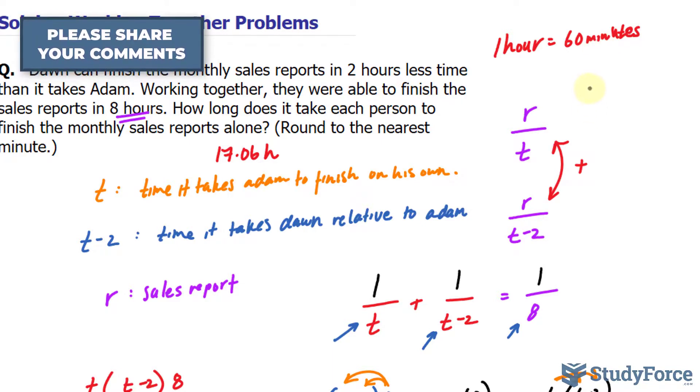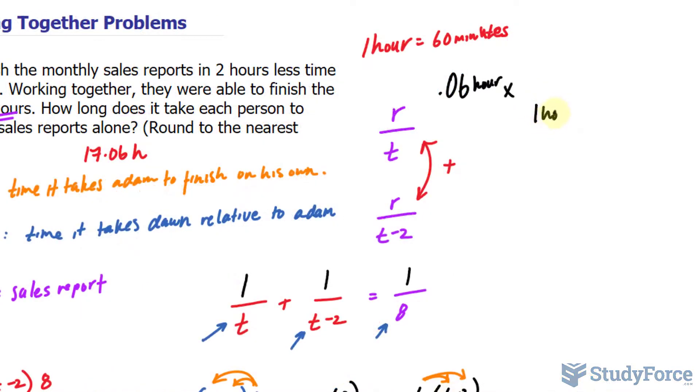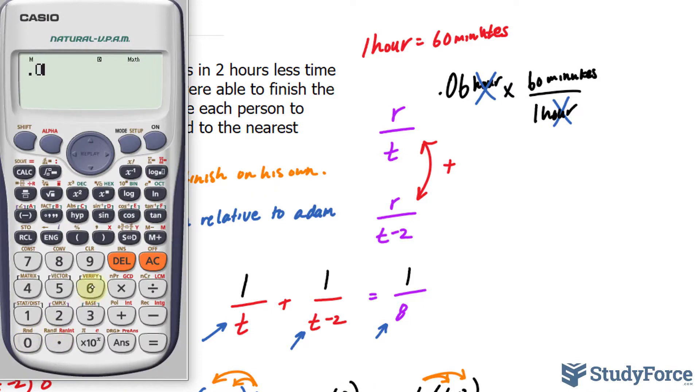If you don't know how to do that, just pretend we have 0.06 hours times one hour at the bottom and sixty minutes at the top. And you'll see that the units cancel out, 0.06 times 60 is 3.6.